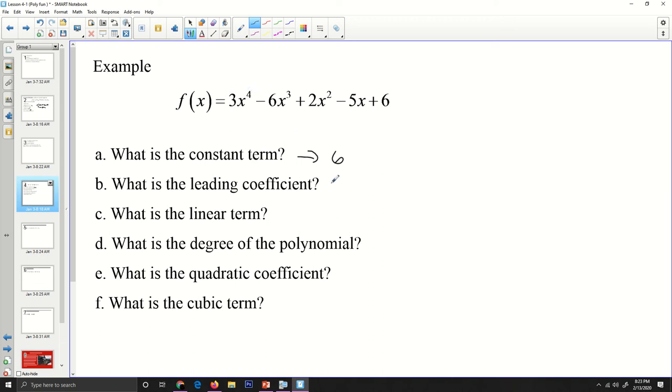Its coefficient is 3. So the leading coefficient is 3. What is the linear term? The linear term is the term that has a degree of 1. And so right here is my linear term. So my linear term is -5x. What is the degree of this polynomial? The degree of this polynomial is 4 because it is the highest power.